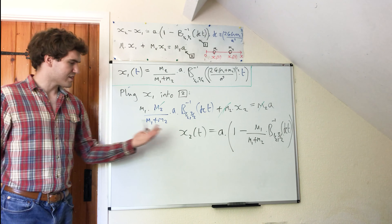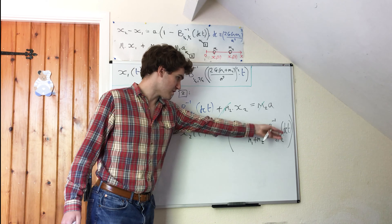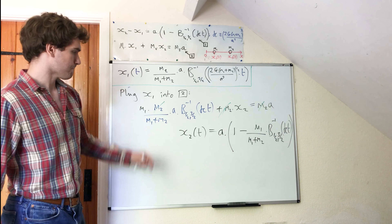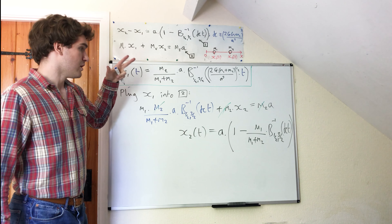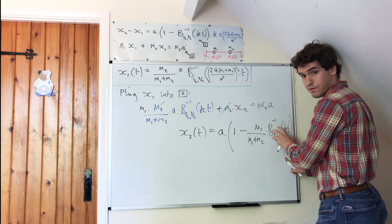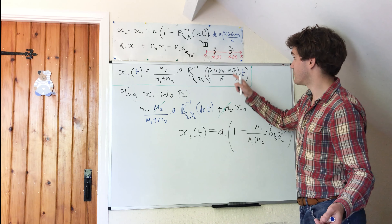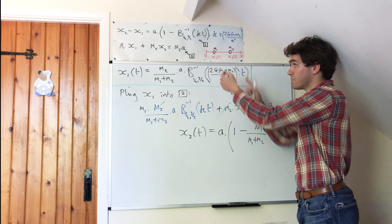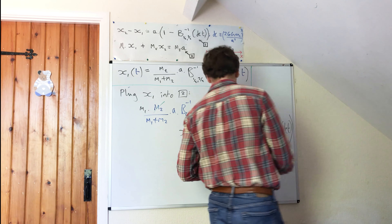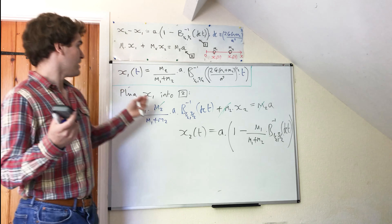Let's do some quick sanity checking. The dimensions are fine: these terms are dimensionless, dimensionless, dimensionless, but we have a factor of a here which has dimension metres, so we know we haven't made a mistake there in the dimensions. When t is zero, the inverse incomplete beta function of zero is zero, and we're just left with a, which is indeed the initial position of x2 on the x-axis. So that's fantastic. We know we haven't made any obvious mistakes, so let's plow on and find the velocities.